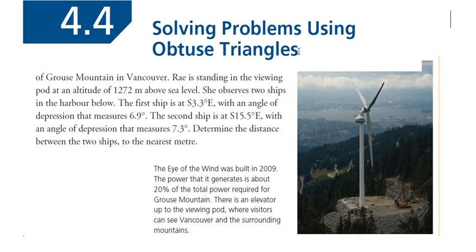Foundations of Math 24.4 — we are solving problems using obtuse triangles. We've been studying the sine law, cosine law, Pythagoras' Theorem, primary trig ratios, supplementary angles, and that angles of a triangle add up to 180. We just did a little activity with the area of a triangle. So we're putting all this together. This is the last section of the chapter, so it brings everything together into big word problems.